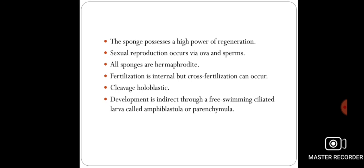In some poriferans, sexual reproduction takes place by eggs and sperms. Fertilization is internal, but sometimes cross-fertilization is also seen, meaning the egg from one organism and the sperm from another organism unite together. The fertilized egg undergoes division called cleavage, and the cleavage is holoblastic.